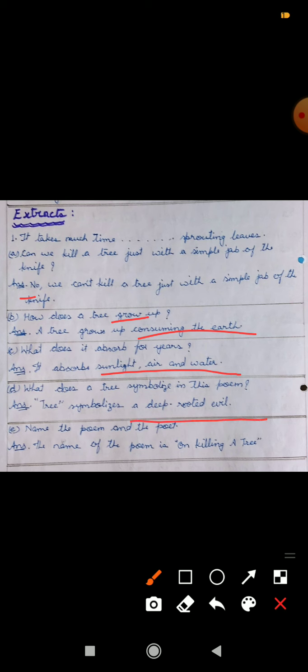Means, jiasse peed ko maalna bhoat muskil hai, bhoat kathin hai, thik aise hi, hamare andar agar koi kami aajaye, koi burai aajaye insaan ke andar, toh usko maalna bhi bhoat muskil hota hai. Burai ko apnana bhoat asan hai, lekin usko maalna, apne zindagi se nikalna bhoat muskil hota hai. Now, next, name the poem and the poet. The name of the poem is On Killing a Tree and the poet is Gieve Patel.